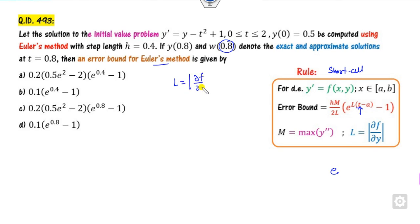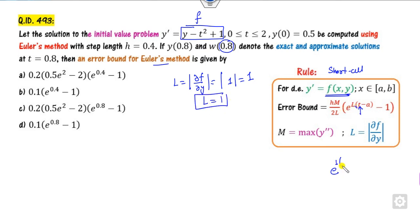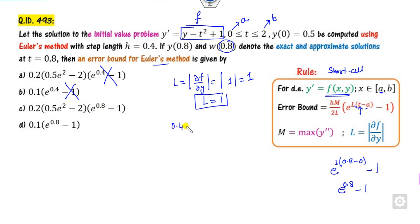First we find L as the partial derivative of F with respect to y. Since F = y + something, the partial derivative with respect to y is 1, so L = 1. With L = 1, the interval from a = 0 to b = 2, and step size h = 0.4, we compute 0.8 - 1, which cancels some options. Now we need M, the maximum of the second derivative of y.